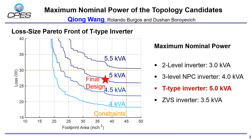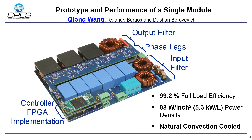In addition, the final design for a converter module, marked by the red star, is picked from the 5 kVA Pareto fronts. Here shows the picture of the single module. It achieved 99.2% efficiency at 5 kVA output. The power density is 88 watts per cubic inch.